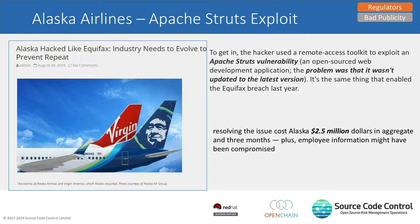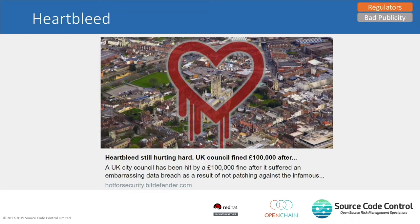Closer to home — does anybody remember a vulnerability called Heartbleed? It's a high-profile vulnerability, about four or five years old. Gloucester Council, around November/December 2017, was fined £100,000 for leaking all their employee data, and that was an exploit of Heartbleed — a four-year-old vulnerability in OpenSSL, a very popular project for secure websites. Security issues are real, and there are regulations coming in mandating the management of open source software.